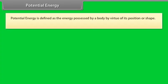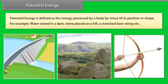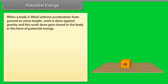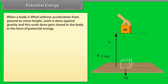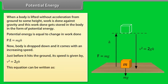Potential energy. Potential energy is defined as the energy possessed by a body by virtue of its position or shape. For example, water stored in a dam, stone placed on a hill, a stretched bow string. When a body is lifted without acceleration from ground to some height, work is done against gravity and this work done gets stored in the body in the form of potential energy. Potential energy equals change in work done, so potential energy equals mgh. Now body is dropped down and it comes with an increasing speed. Just before it hits the ground, its speed is given by V square equals 2gh. This equation can be written as half mv square equals mgh.